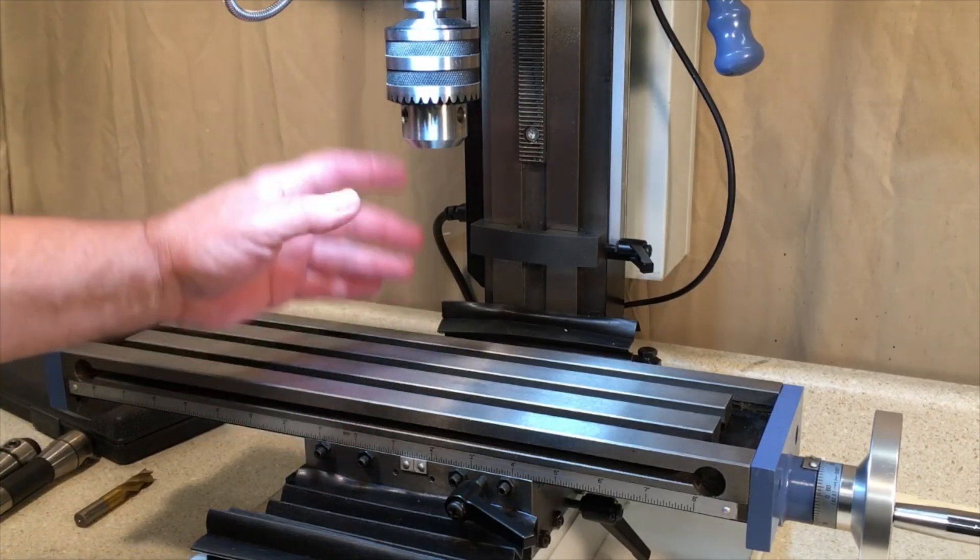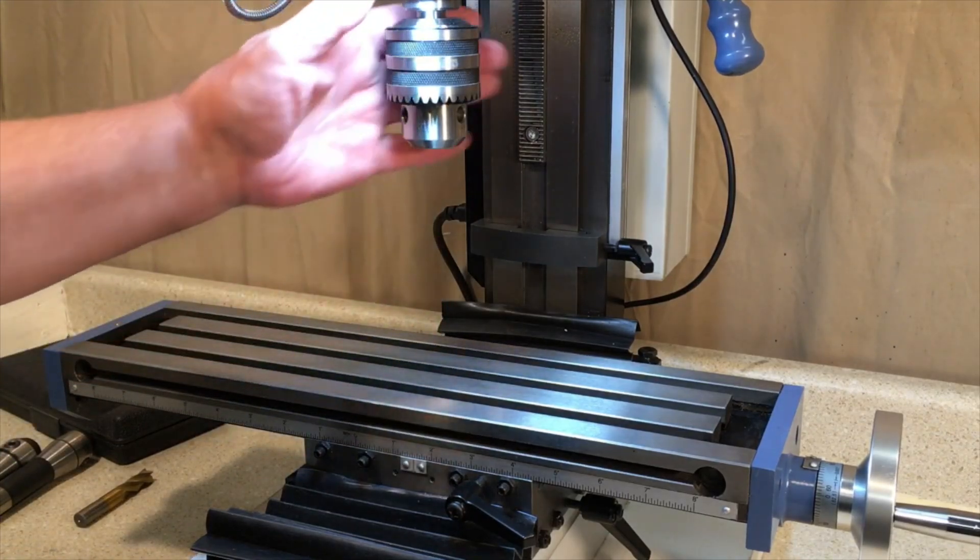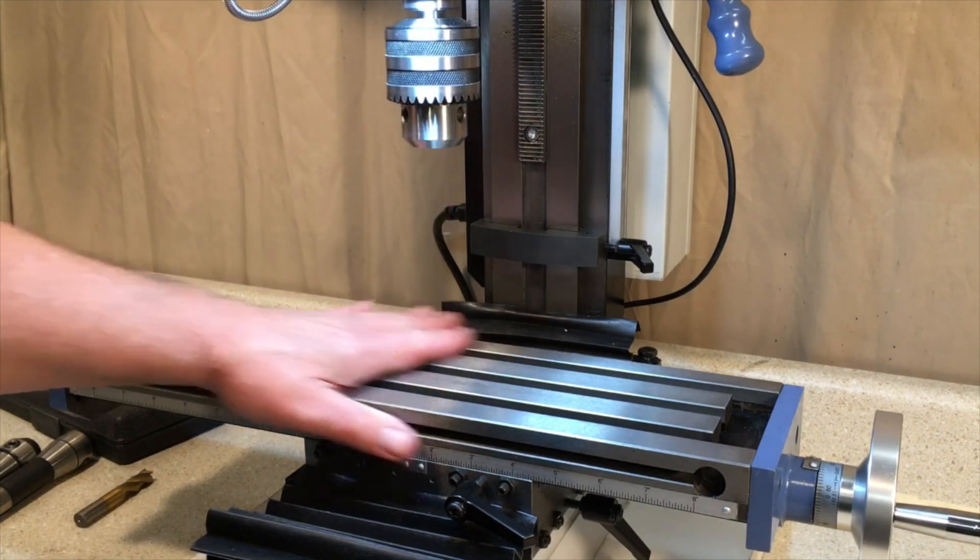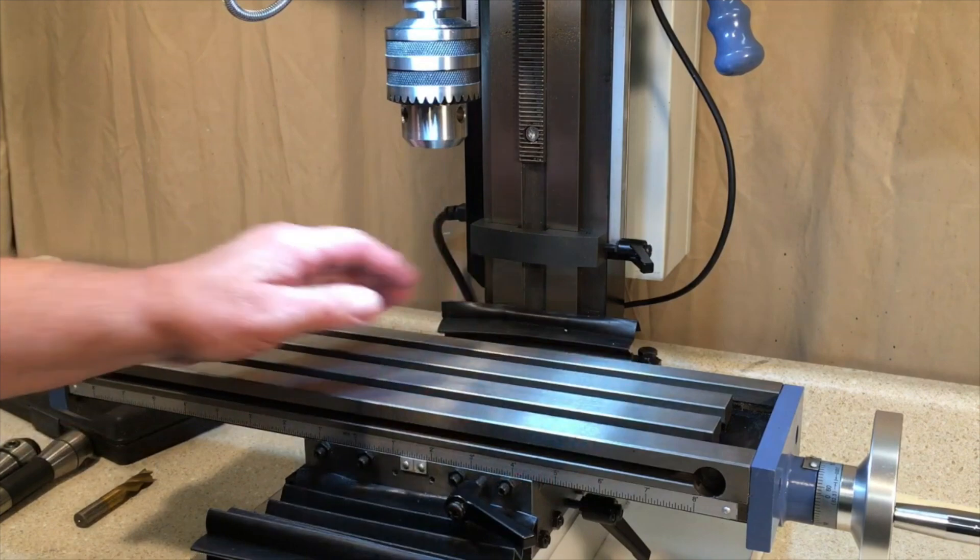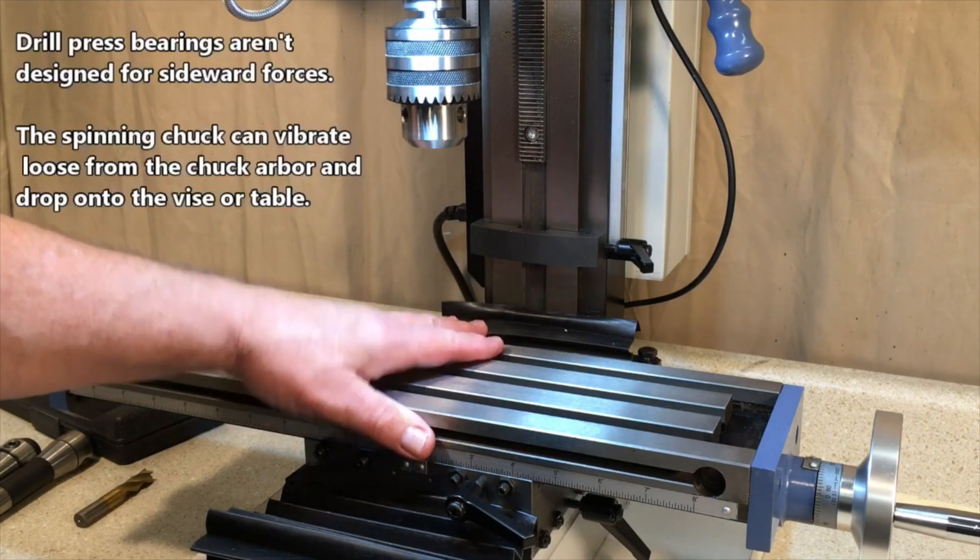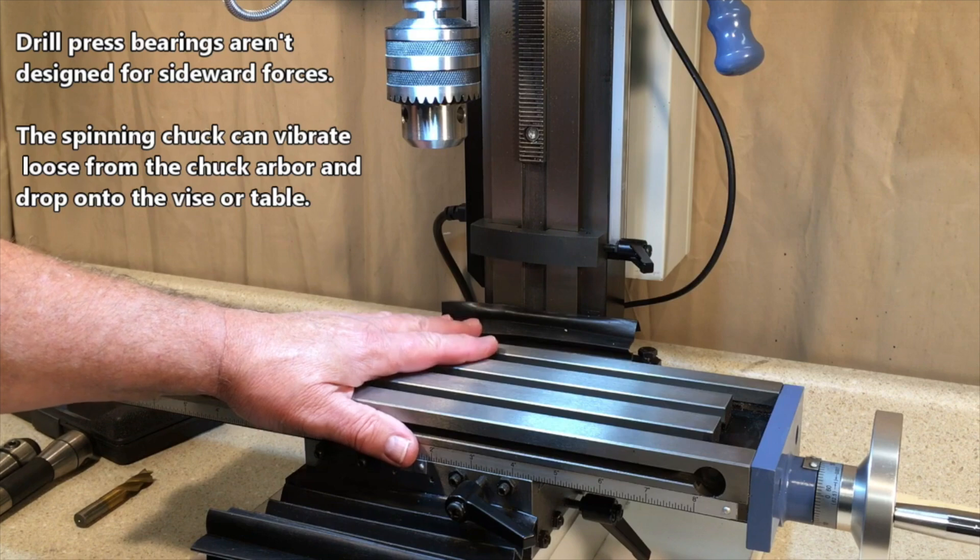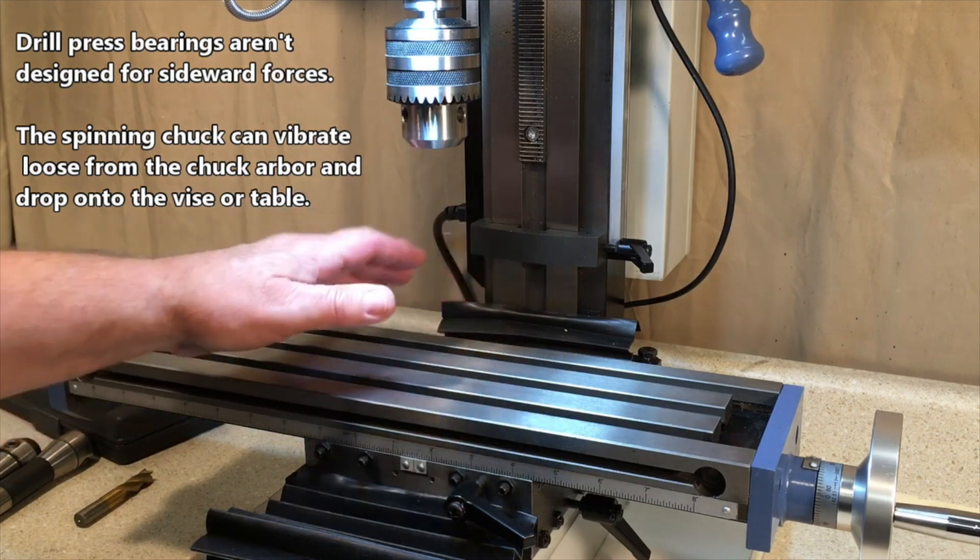Well, as much as I like it for drilling purposes, of course, the real benefit of the mini mill is its ability to cut metal side to side, which you generally can't do and shouldn't try to do on a drill press. So that opens up a whole new world of possibilities and shapes and things that you can make.